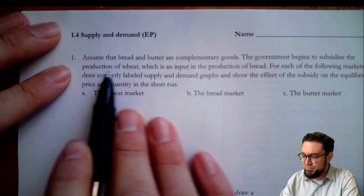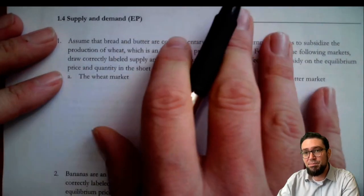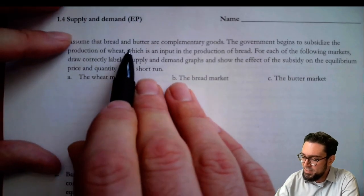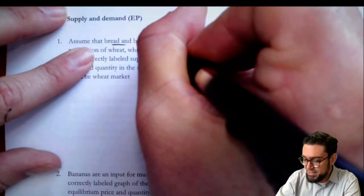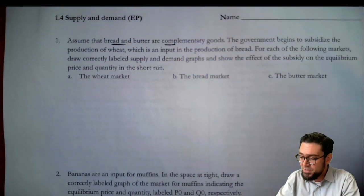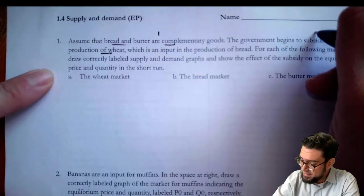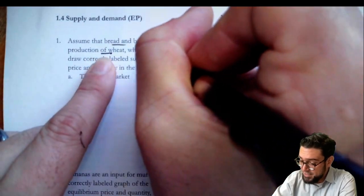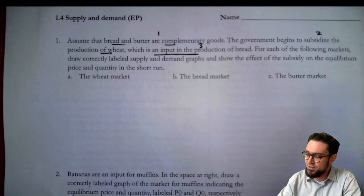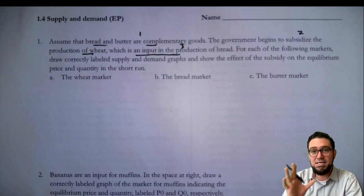This first question has three graphs that we're going to quickly draw. It gives us some very important information. This is actually an old AP exam problem, so it's great practice. First, bread and butter are complements — that tells us how they shift in response to a price change of one or the other. The government begins to subsidize wheat, which is going to start to change things. Wheat is an input to bread, so that's a third relationship we're keeping track of here.